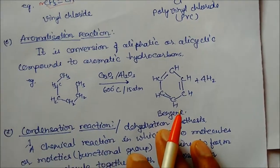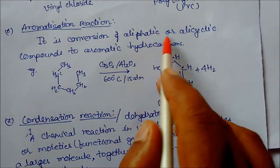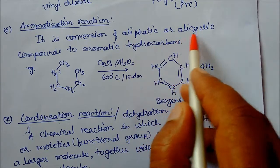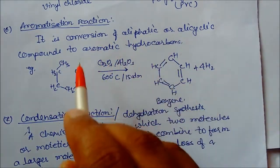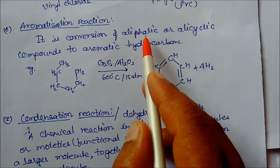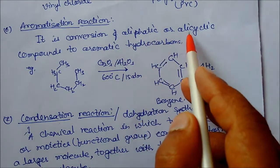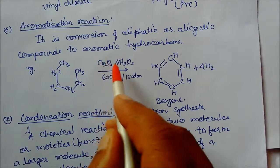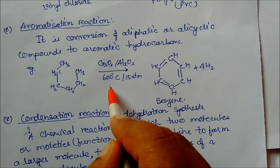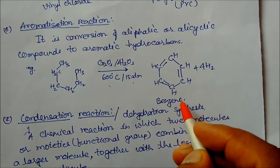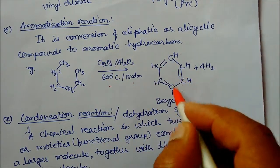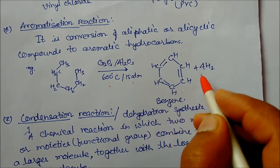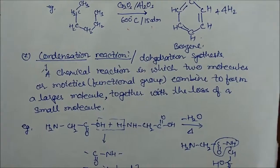Next is aromatization reaction — the conversion of aliphatic or alicyclic compounds to aromatic hydrocarbons. Aliphatic means straight chain compound; alicyclic means a saturated compound in cyclic form. You will study this in carbon compounds. Here, an aliphatic compound with Cr2O3 catalyst at high temperature and pressure converts into benzene. Benzene is a six-membered aromatic compound. This is how aromatization works.